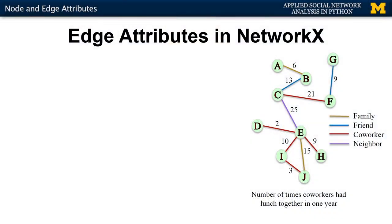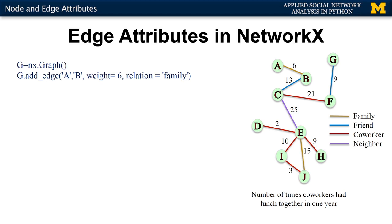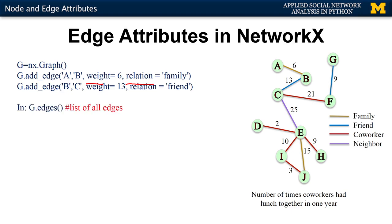Last time we saw how we can add attributes to the edges of NetworkX in order to represent different values that they might have on the network. Here is an example of a network where the color of the edges represents the relationship between the nodes, and there's a number on the edges that represents how many times they had lunch together. When using NetworkX to construct these graphs, we simply add attributes to the edges when we add them, such as the weight and the relation.